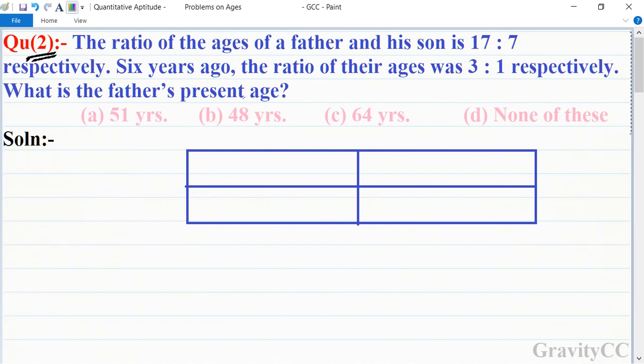First we write here present ages and six years ago, with rows for father's age and son's age.